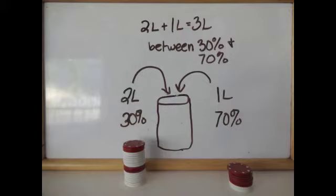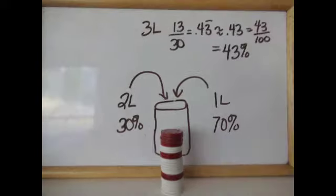And our percentages will be between 30 and 70, closer to 30 because we're adding more of the 30 percent solution. So when we mix the solutions, we can see 13 punch chips out of the 30 because we got 20 from one and 10 from the other. We'll change 13 thirtieths to a decimal.